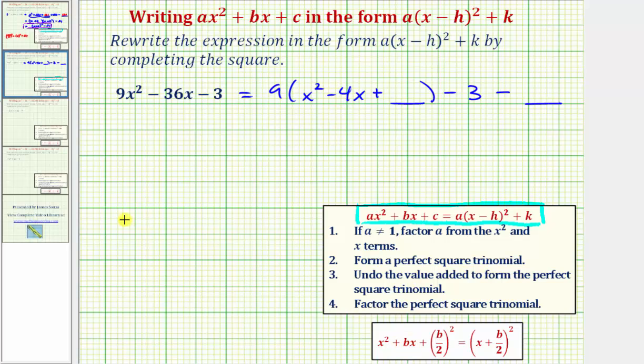Notice here, b is equal to negative four, so we're going to add negative four divided by two squared, which would be negative two squared, which equals four. So we're going to add four here to make this a perfect square trinomial.